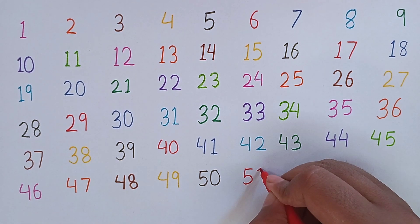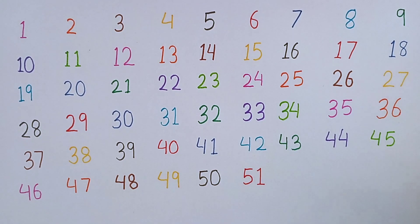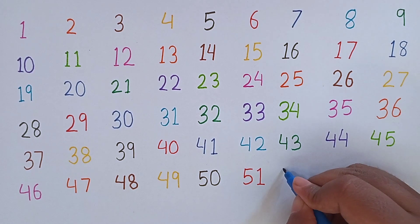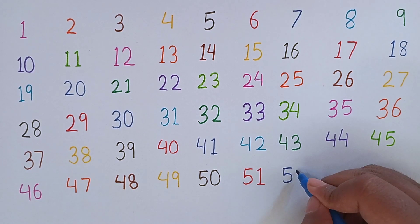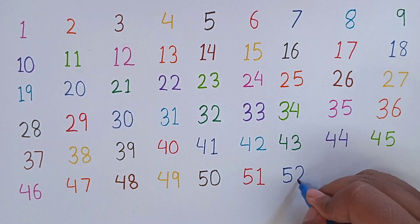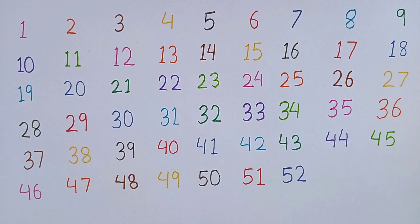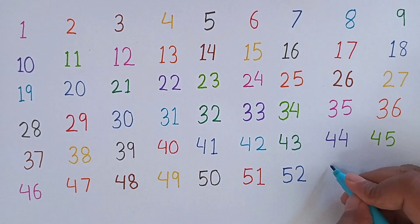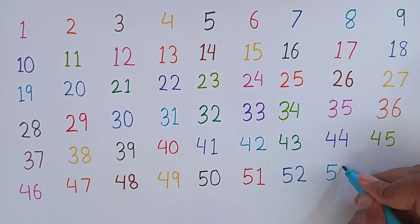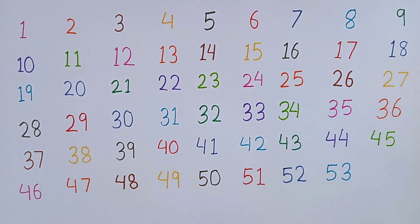Now I am writing 51. This is 51. 5, 1 — 51. After 51, the next number will be 52. 5, 2 — 52. Remember: 5, 2 — 52. After 52, the next number will be 53. 5, 3 — 53.